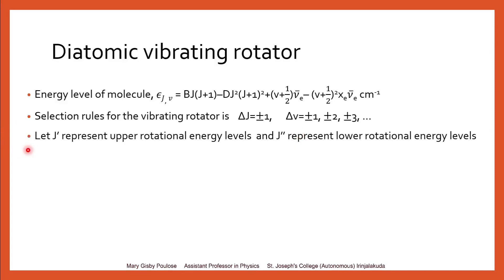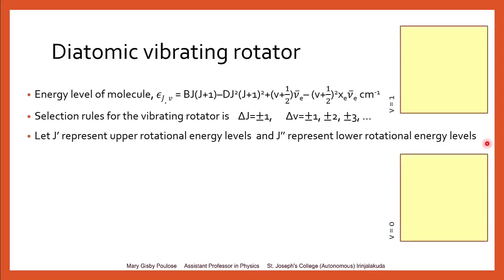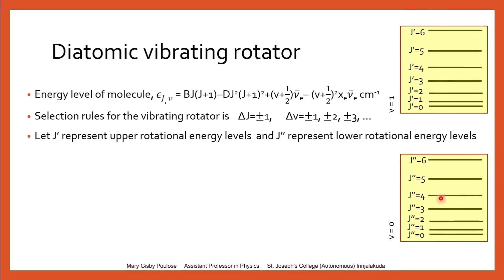Let us assume that the molecule is being excited — it is absorbing energy. For that, let j′ represent the rotational energy levels in the upper vibrational level. We have two vibrational energy levels: v = 0 (this level) and v = 1 (this level). The rotational energy levels in the lower, v = 0 vibrational energy are represented by j″, and the rotational energy levels in the upper vibrational energy v = 1 are represented by j′.